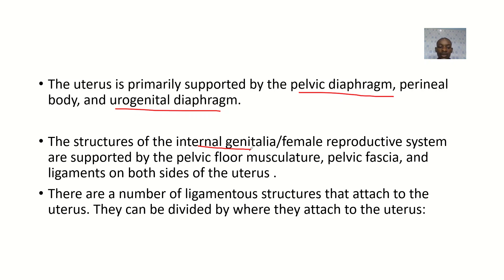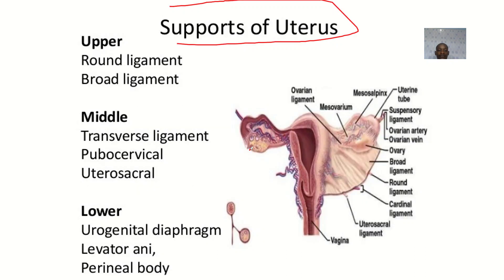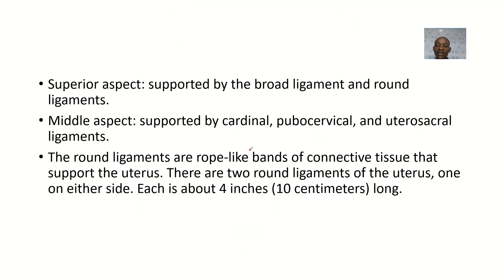There are a number of ligamental structures that attach to the uterus, and they can be divided by where they attach. This is a common examination question — they ask you about the ligaments that actually support the uterus. On the superior aspect, we have the broad ligament and the round ligament.